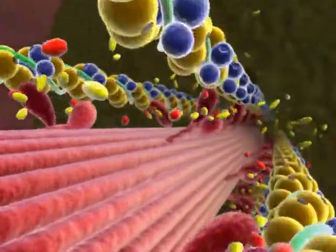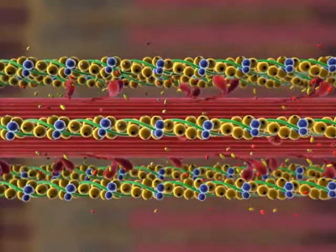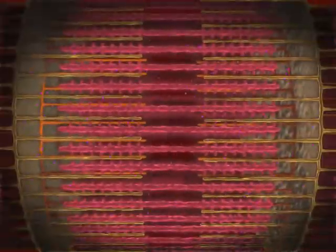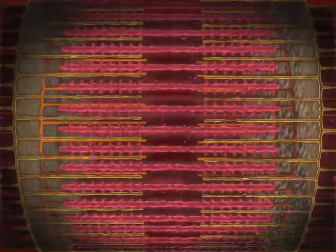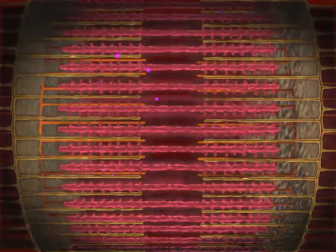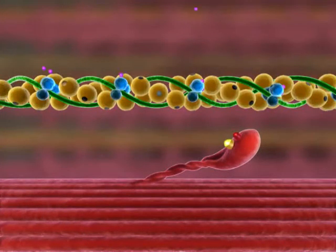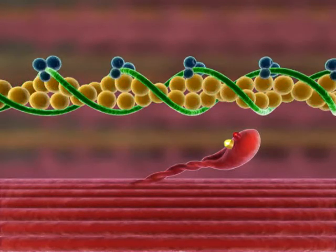As long as the binding sites on actin remain exposed, the crossbridge cycle will repeat. And as the cycle repeats, the thin myofilaments are pulled toward each other and the sarcomere shortens. This shortening causes the whole muscle to contract. Crossbridge cycling ends when calcium ions are actively transported back into the sarcoplasmic reticulum. Troponin returns to its original shape, allowing tropomyosin to glide over and cover the myosin binding site on actin.